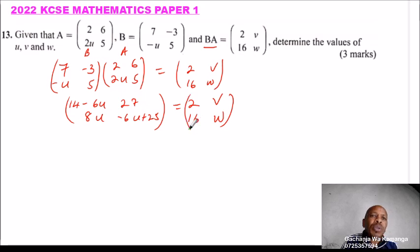So this matrix equals 2V, 16W once you combine. Now, because corresponding elements of a matrix are equal, it means 8U is the same as, this equals that, 16 divided by 2, U equals 2.